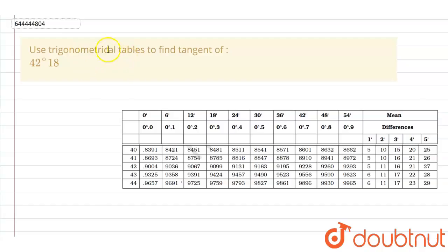Hello everyone, in this question we have to use trigonometrical tables to find the tangent of 42 degree and 18 minutes. That is tan of 42 degree and 18 minutes.